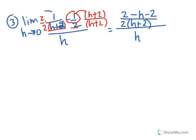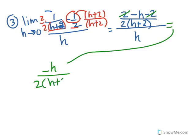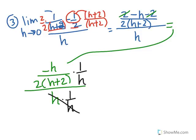Stuff is going to simplify. The 2s end up canceling in the numerator, and I end up with negative h over 2 times (h plus 2), all divided by h. So I have a fraction within a fraction. To get rid of this, I can multiply by 1 over h. The h's end up canceling, so I'm left with negative 1 over 2 times (h plus 2).